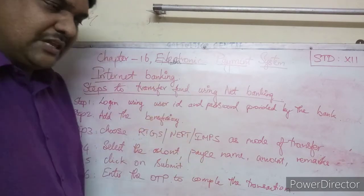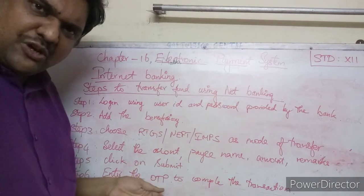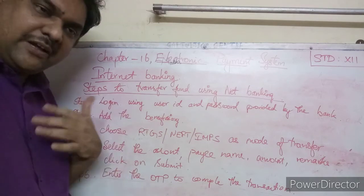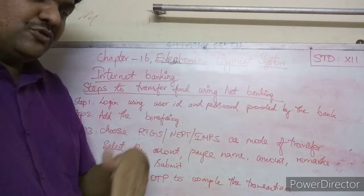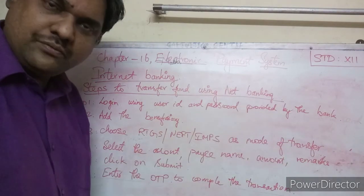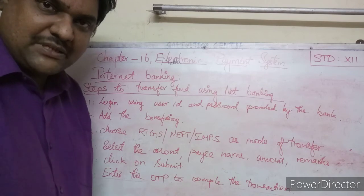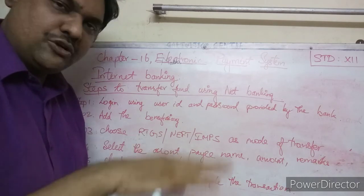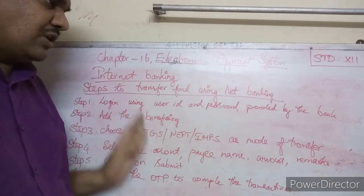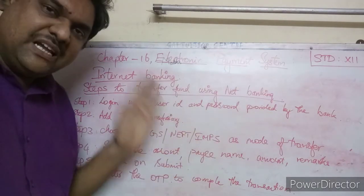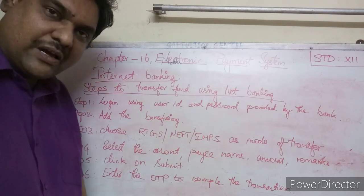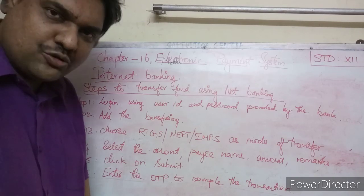Enter the OTP within 20 seconds. Once you enter the OTP, the amount will be transferred from your account. You will receive a message on your phone and on screen that the amount has been successfully transferred. This is how you transfer the amount from one account to another using net banking.